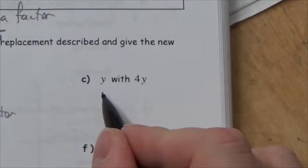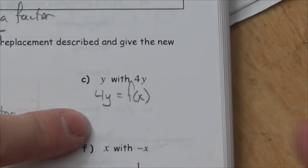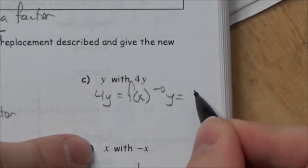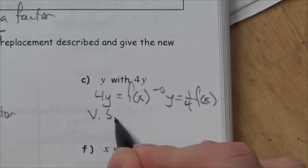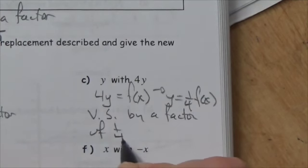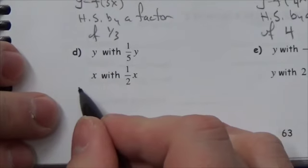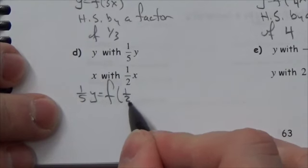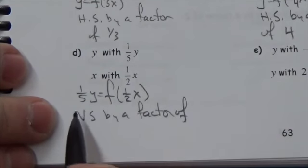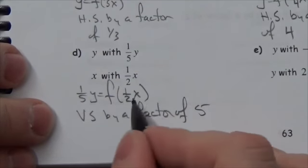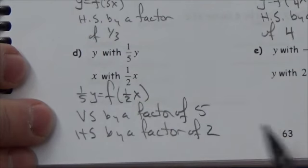If I replace y with 4y, I get 4y = f(x). To isolate y I divide by 4, so this is a vertical stretch by a factor of 1/4. If I replace y with (1/5)y and x with (1/2)x, I get (1/5)y = f((1/2)x). To get y by itself I multiply by 5 — vertical stretch by a factor of 5. To get x by itself I multiply by 2 — horizontal stretch by a factor of 2.